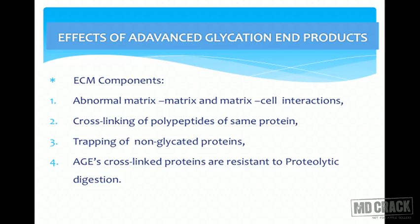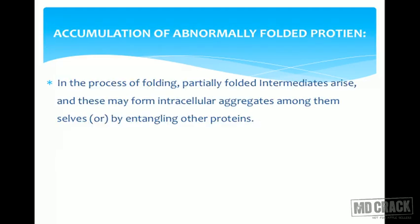Advanced glycation end products (AGEs) play an important role in abnormal matrix-to-matrix and matrix-to-cell interactions. They also play a role in cross-linking of polypeptides within the same proteins and in trapping non-glycated proteins. AGE cross-linked proteins are resistant to proteolytic digestion and accumulate inside cells as aging advances.